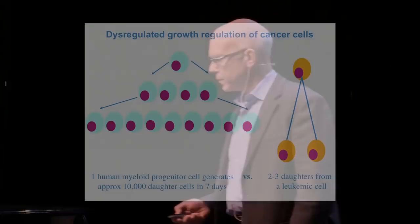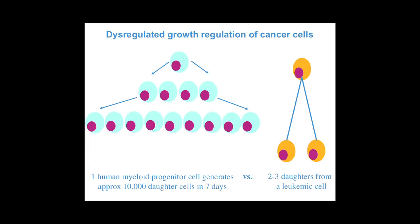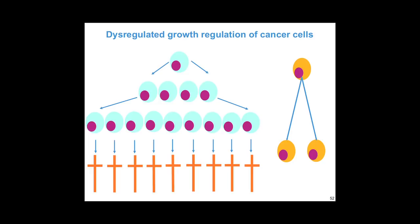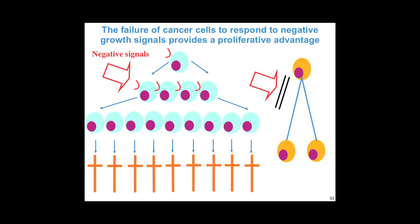Why is that? If you take a normal white blood cell progenitor, it's able to give rise to about 10,000 daughter cells in the space of a week — enormous potential for growth and proliferation. Whereas a leukemic cell will, at best, give rise to two or three daughter cells over the next couple of weeks. The difference is that the normal cells do their job, behave properly, and die. The cancer cells hang around forever. The normal cells are receiving lots of negative signals saying stop, we've got enough of you, stop growing, you've done your job, it's time to die — and they respond. But the cancer cells do not. Cancer cells grow very, very slowly — more slowly than their normal counterpart — and cancer therapies wouldn't be effective if this were not the case.